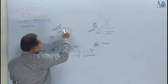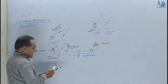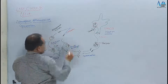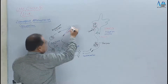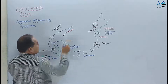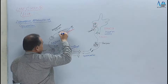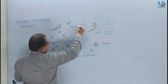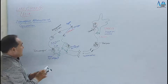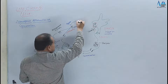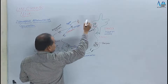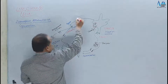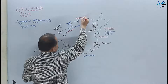Jaise hi yeh gametes aapas mein fuse honge, is process ko hum syngamy ya fertilization kehte hain. Yahan par diploid cell banega, kyunki N + N milkar 2N banate hain. Dono haploid gametes ne mil kar zygote banaya, jise hum oospore bhi kehte hain. Ab yeh oospore germinate hoga into a new sporophyte.